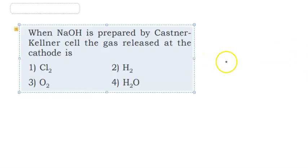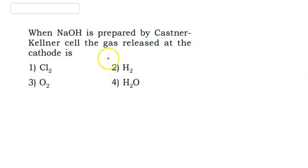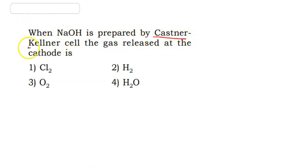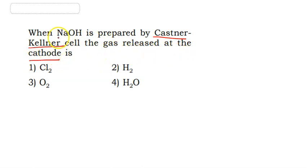Next question: when NaOH is prepared by the Castner-Kellner cell, the gas released at the cathode is — this relates to NaOH and the Castner-Kellner cell process.